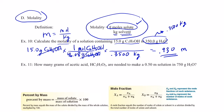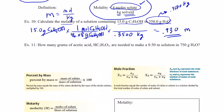Let's try another one. This time I'll give you the molality and the amount of solvent, and I want you to find the grams of solute. That's Example 11: a 0.50 molal solution, 750 grams of water (the same as 0.75 kilograms), and I want to know the grams of acetic acid.